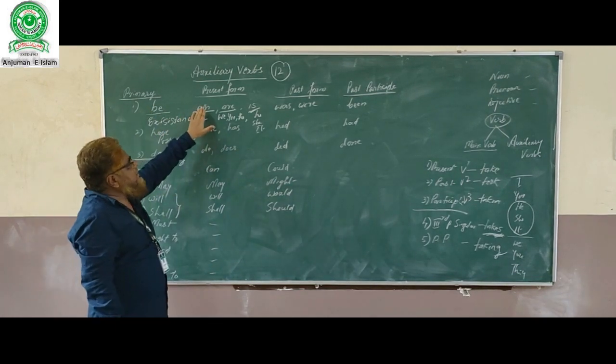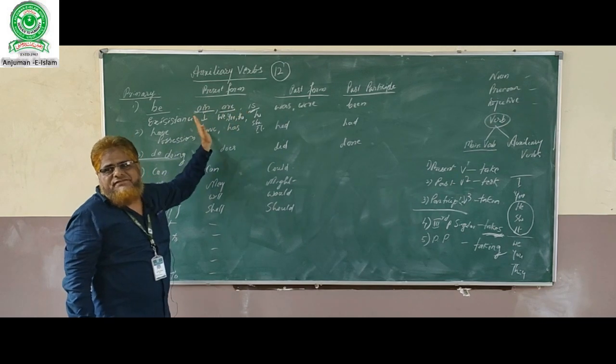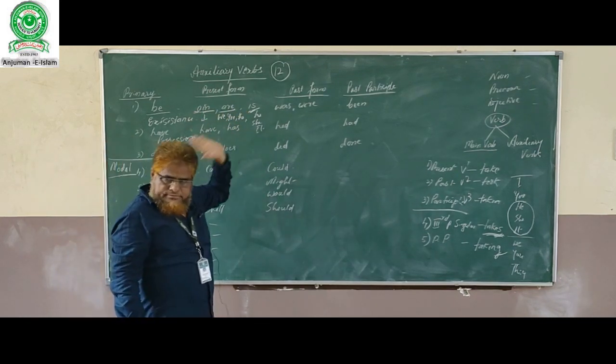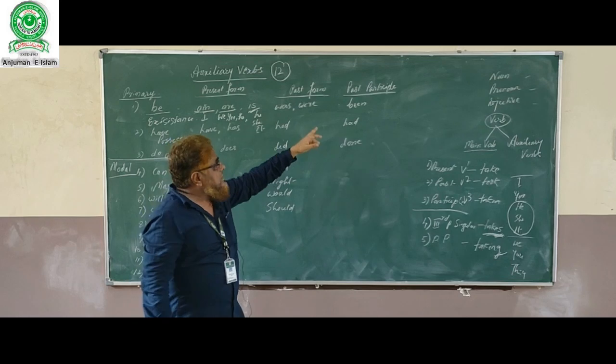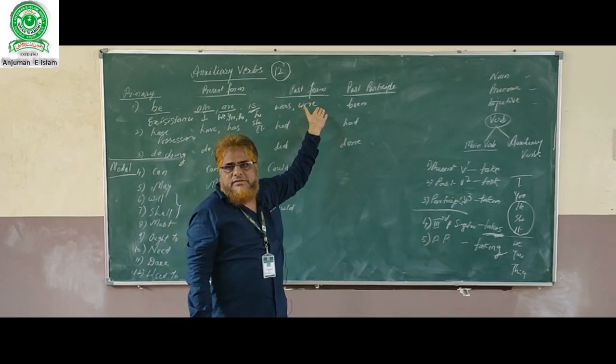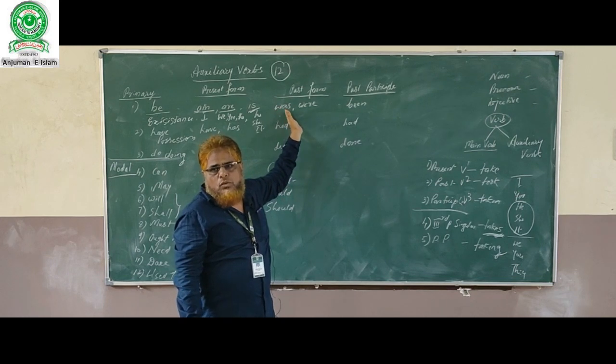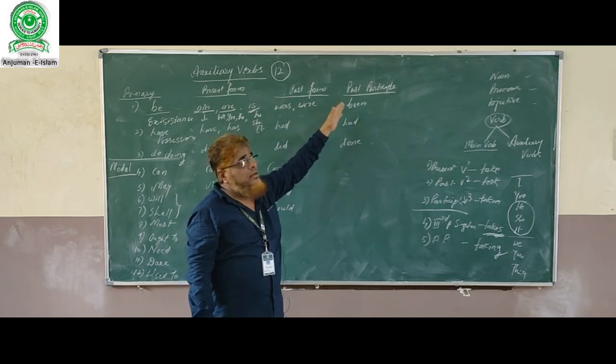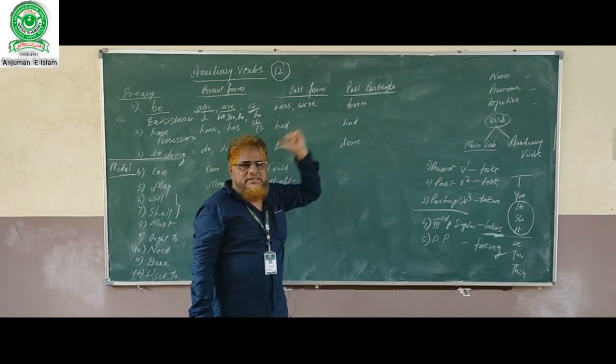Be: am, are, is for different pronouns, different auxiliaries. The past form of 'be' is was and were. Participle form is 'been.'